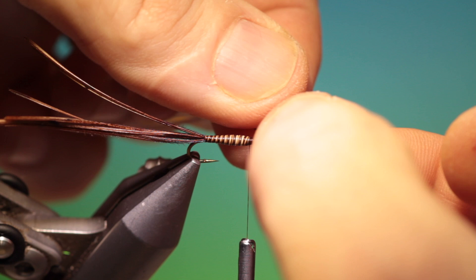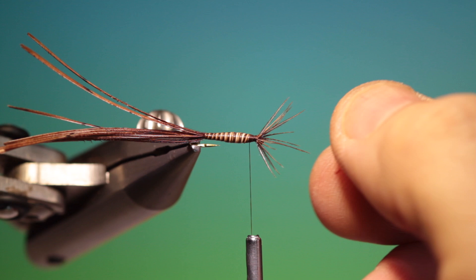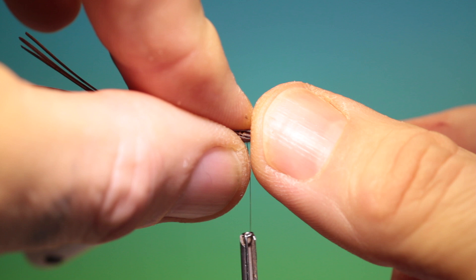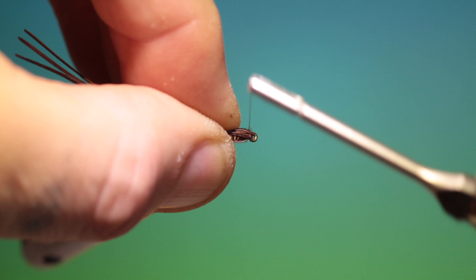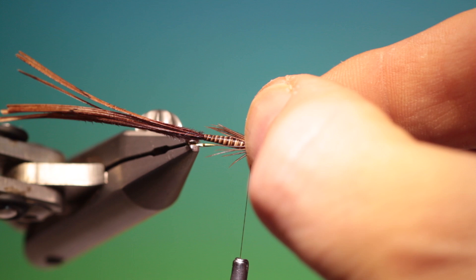Turn it that way so you can see it better. So approximately half and half, push it back like that, hold it in position. We'll start at the hook eye, make two or three turns, and then we can separate it out.